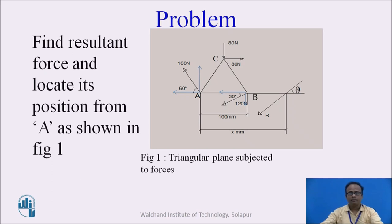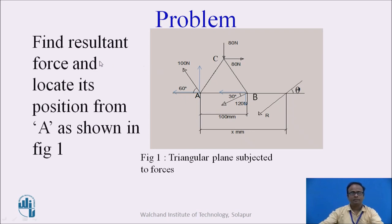This is a problem. A triangular plane is shown and it is subjected to forces at different vertices. At A, there is an inclined force of 100 N acting at an inclination of 60 degrees with the horizontal X axis. There is another force acting at B having magnitude 120 N with inclination of 30 degrees with the X axis. At point C, one force acts vertically downward having magnitude 80 N, and another force of 80 N acts in the rightward direction as shown in the figure.